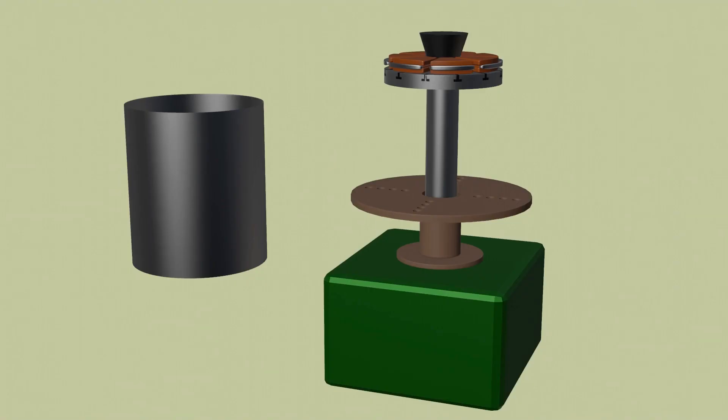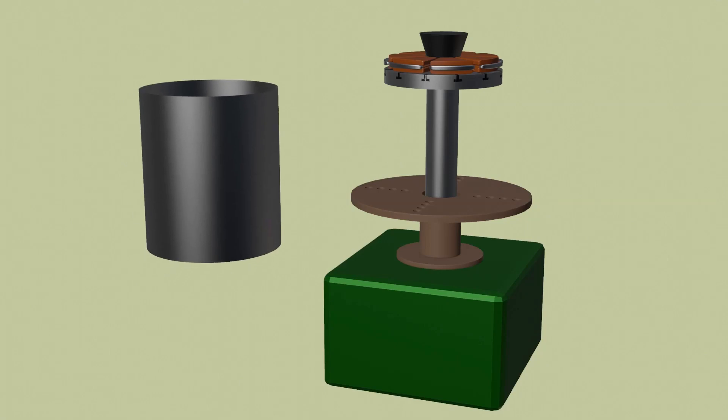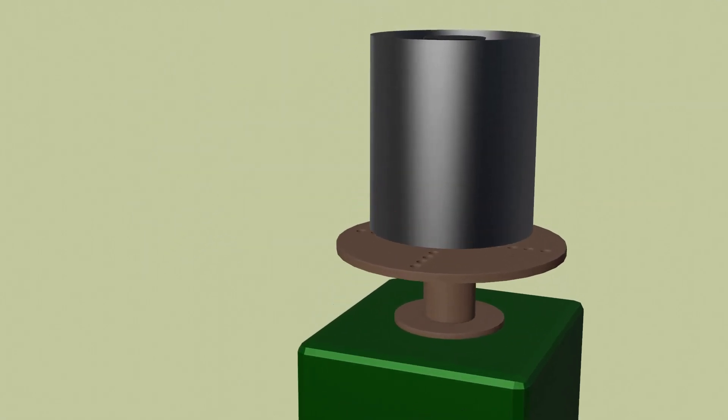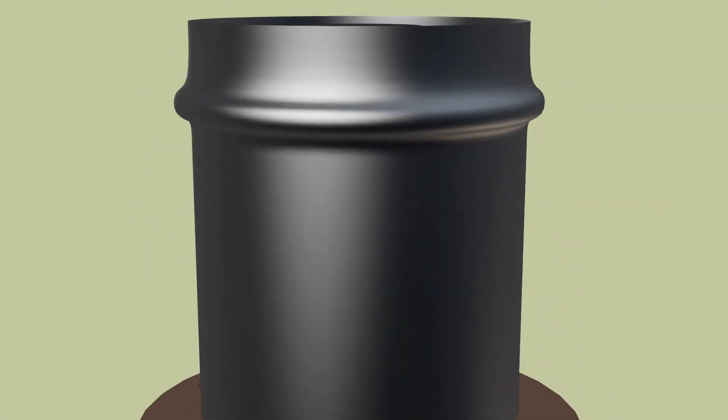After completing the bellow sheet welding, load the bellow tube to the machine. The machine will automatically form the convolutions as per the required number.